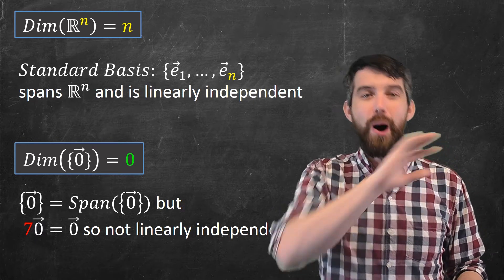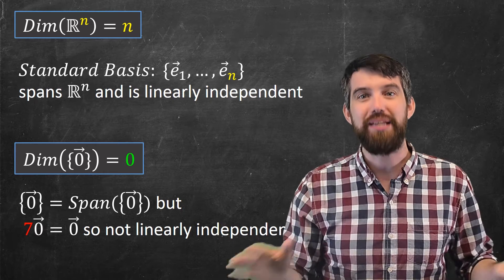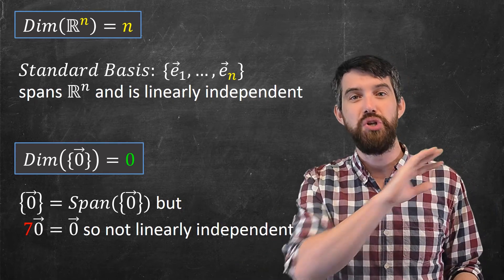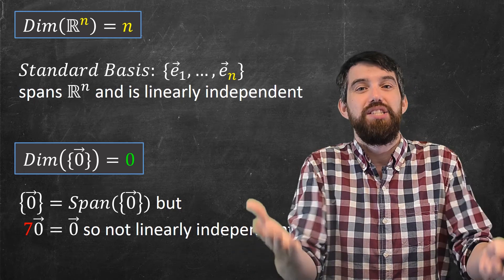So the only possible basis I could ever have is not a basis, because it's not linearly independent, so there is no basis. And so we just say the dimension of this is zero.